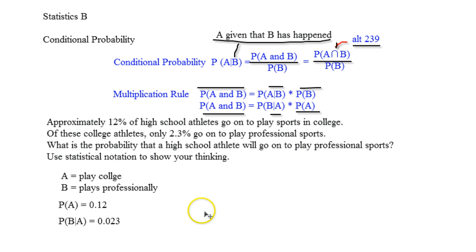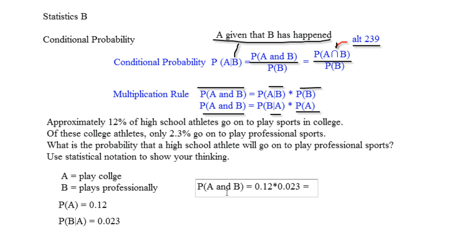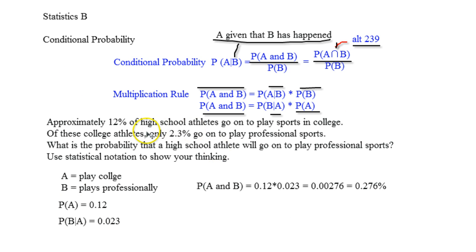What is the probability that the high school athlete will go on to play college sports? So that's AND right there — the probability of A and B happening. What you're going to literally do is go 0.12 times 0.023. If we check on our calculator: 0.12 times 0.023 equals about 0.00276, which is the same as about 0.276% chance of going from high school to professional athletics. That's the cool thing about conditional probability — it helps answer these tough questions that a lot of people have.